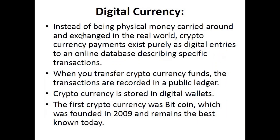Instead of being physical money exchanged in the real world, cryptocurrency payments exist purely as digital entries in an online database. Cryptocurrencies do not exist in any physical form, whereas centralized digital currencies can exist both physically and digitally. When you transfer cryptocurrency, transactions are recorded in a public ledger known as blockchain. Cryptocurrency is stored in digital wallets. The first ever cryptocurrency was Bitcoin, founded in 2009 by Satoshi Nakamoto, who gave us the blockchain system.